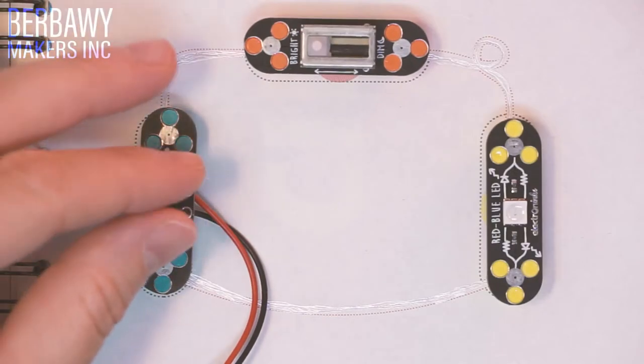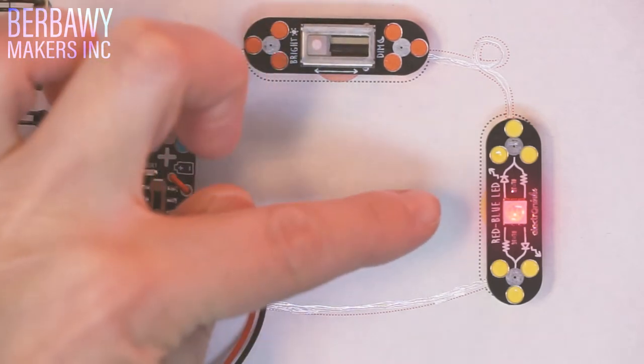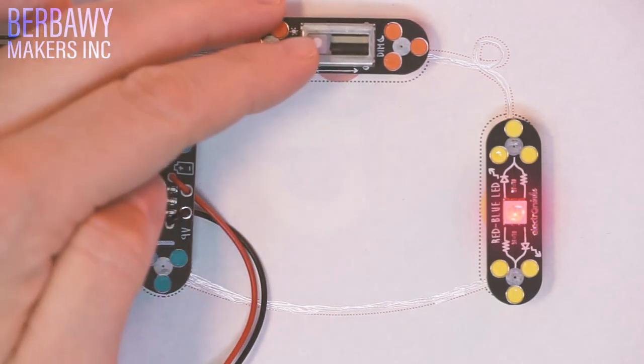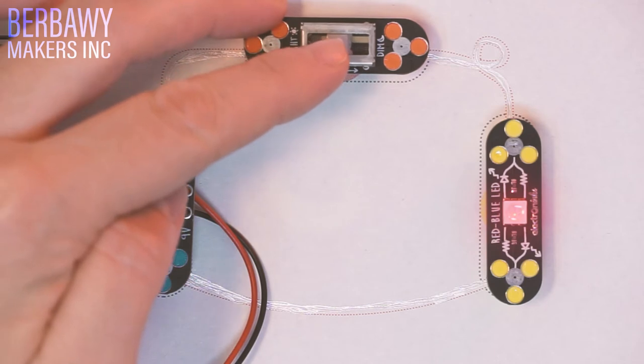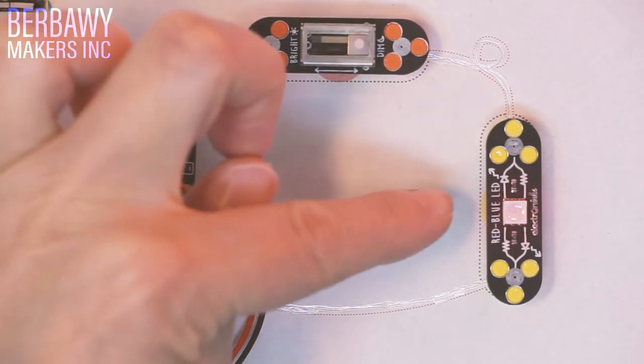Let's turn on our battery component and see how it all works. My dimmer switch is in the brightest position right now and you can see that my LED is quite bright. As I slide the switch down to the dim side, it gets dimmer and dimmer and dimmer until when we're all the way there, it's quite dim.